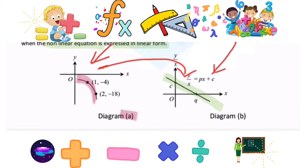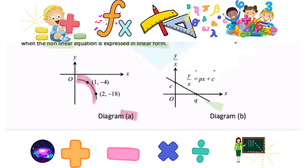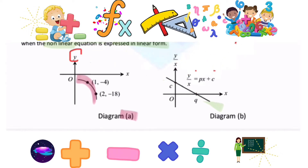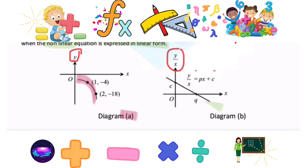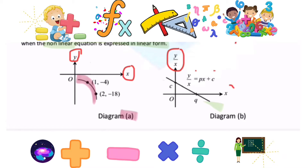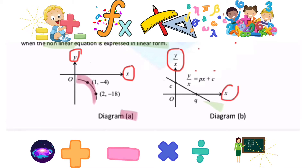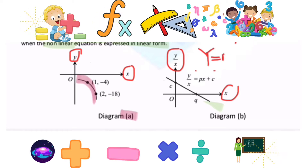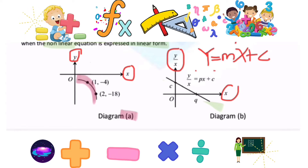Now look at the axes of the two graphs. The non-linear graph has y and x axes; the linear one also has Y and X axes. From the linear form, we will write y = mx + c.